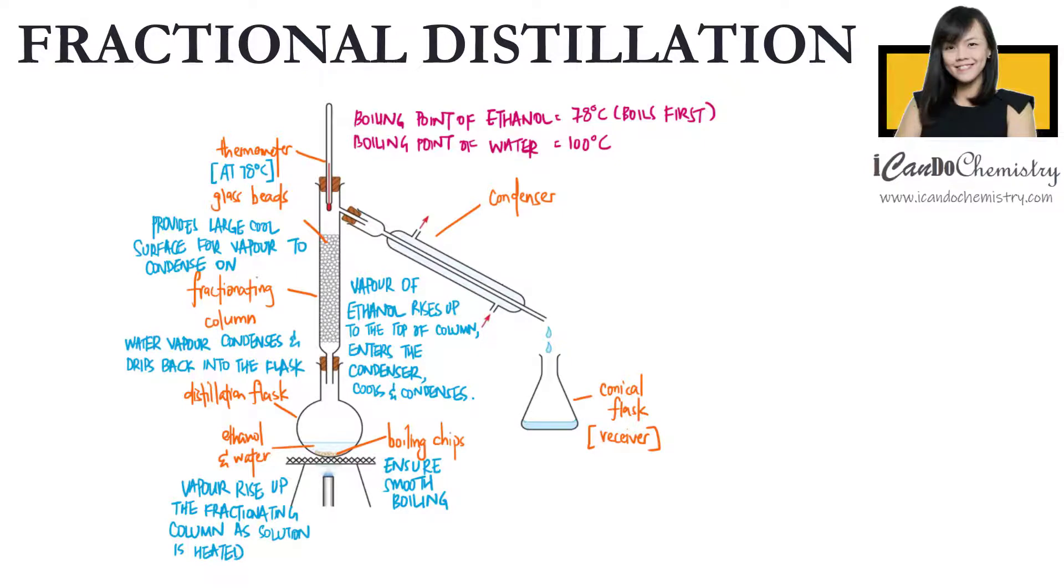Hence the purpose of the fractionating column is to separate the vapour of the different liquids in the mixture, so as to ensure that, as much as possible at any one time, only one vapour is able to enter the condenser.